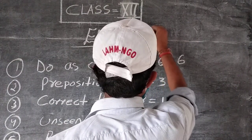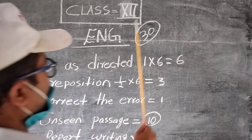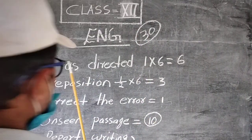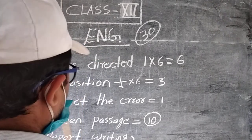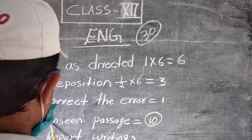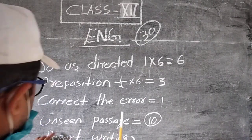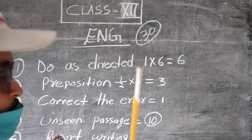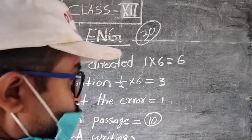The English textbook has 30 marks from grammar portions. They will ask you: do as directed, preposition, correct the error, then unseen passages.